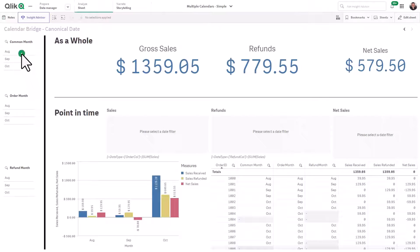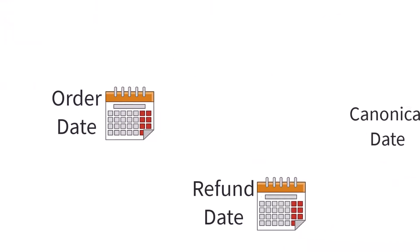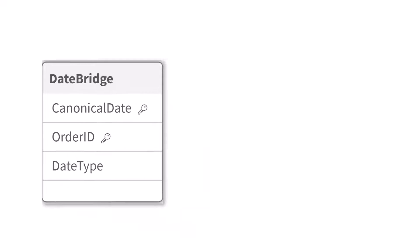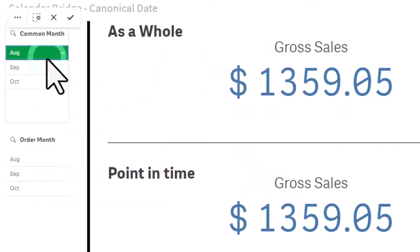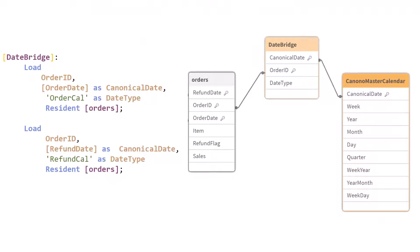Do you need specific answers for points in time when working with multiple dates? Then use a calendar bridge, used to create what Qlik commonly calls a canonical calendar. A calendar bridge is a simple table that links one or more dates to a single common date — a canonical date — used to simplify time period selection during analysis. The bridge table is linked to a key field in your data and created with a new dimension to simply describe each date type you have.